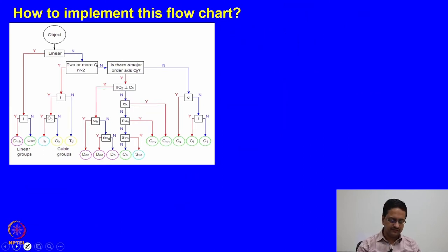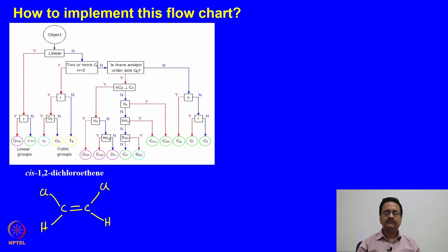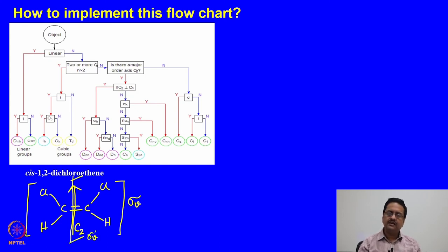For cis-1,2-dichloroethane, from the previous class we discussed that there is a C2. The molecular plane is a σv and the perpendicular plane containing the C2 is another σv. So it is like the water molecule — by symmetry it has the same symmetry as water. Therefore, the point group is again C2v.